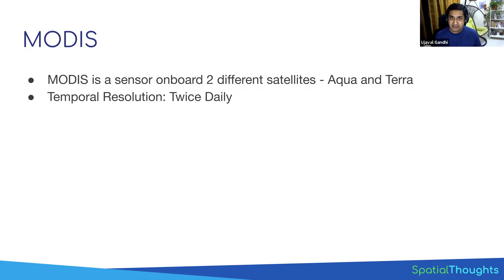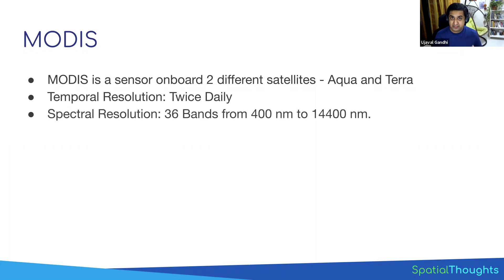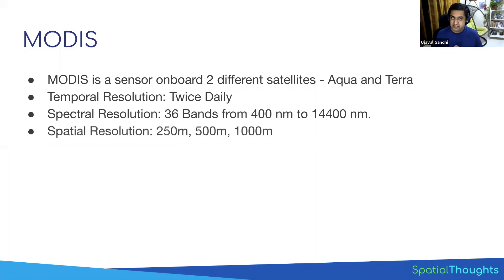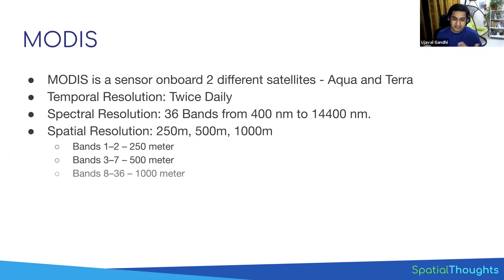That's really great and powerful for many different kinds of use cases. It also has a really good spectral resolution — 36 bands in the visible and infrared spectrum, giving very high spectral resolution and very high temporal resolution. On the spatial resolution side, you have bands one and two at 250 meters, and then other bands at 500 meters and 1000 meters.